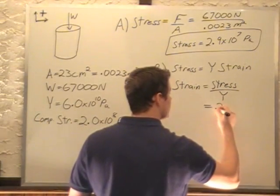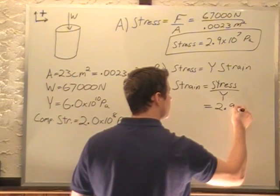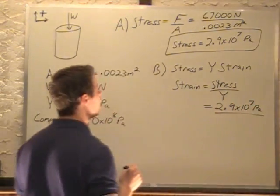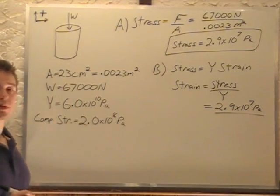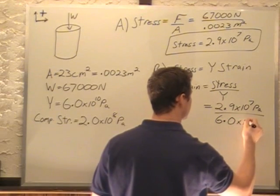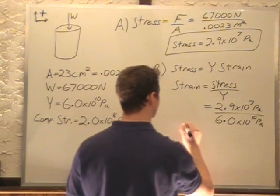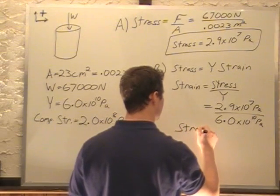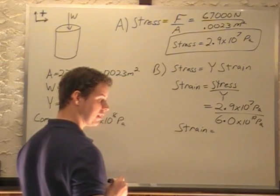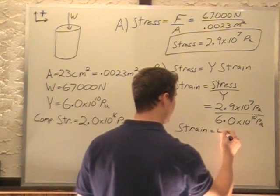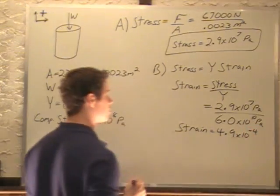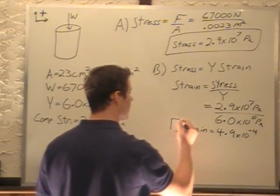Stress of 2.9 times 10 to the 7th pascals divided by our Young's modulus of 6.0 times 10 to the 10 pascals gives us a strain of 4.9 times 10 to the minus 4. Now I am rounding to two significant digits because that's what we have for our problem. This is the answer for B.